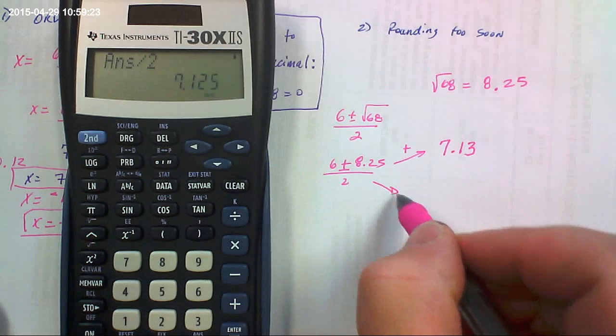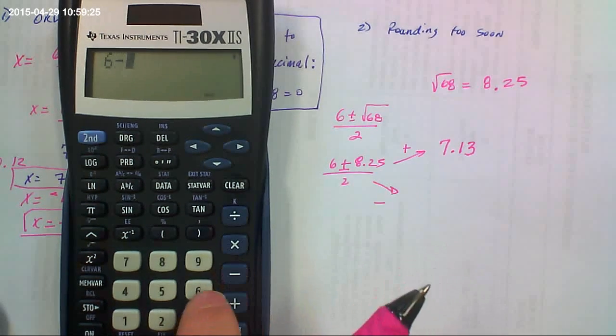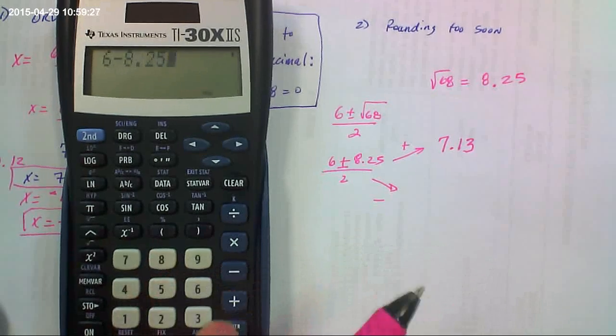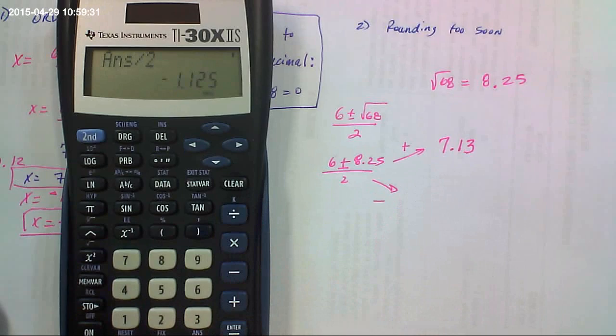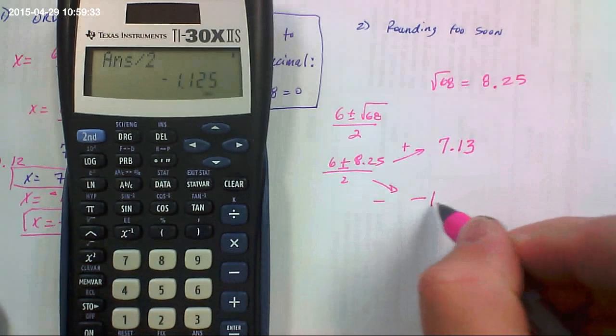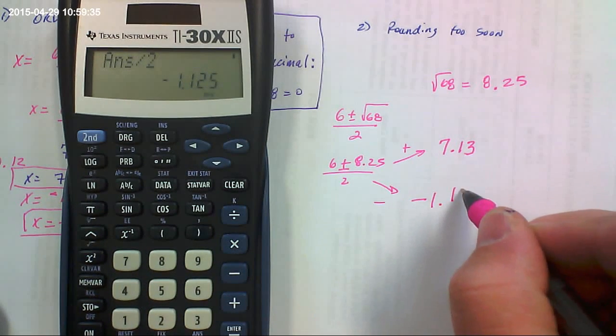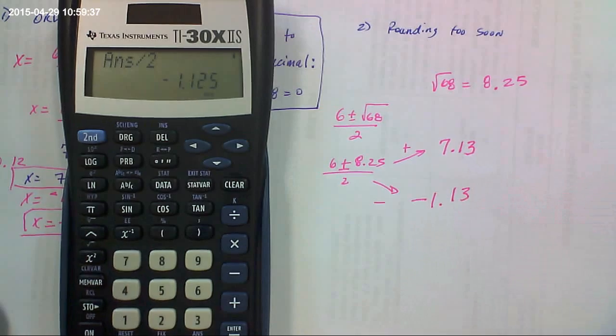And then they would do the minus. They would say 6 minus 8.25 equals, divided by 2, equals negative 1.125, which would round to negative 1.13.